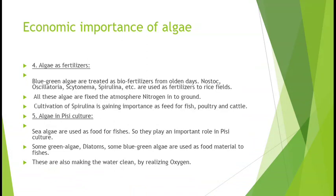Ye atmospheric nitrogen ko fix karte hain aur yahi nitrogen chaawal ke plant ko prapt hoti hai. Cultivation of Spirulina is gaining importance as fuel, as feed for fish, poultry and cattle. Spirulina fish ke feed ke roop mein, poultry aur cattle ke liye bhojan ke roop mein kaam mein aata hai.